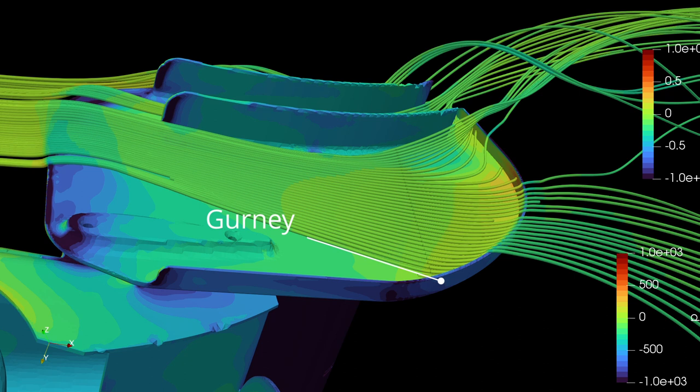Around the rear of the end plate is a gurney flap. I like to think of gurney flaps as kind of a virtual extension of a surface but at an angle. In this case, the gurney creates some outwash around the edges of the end plate, which helps with air extraction from under the wing, particularly when the car is in yaw or is turning.